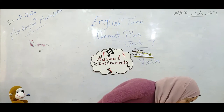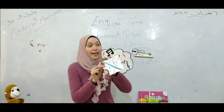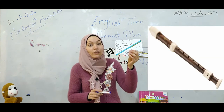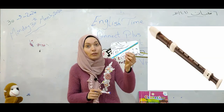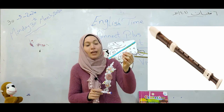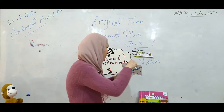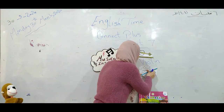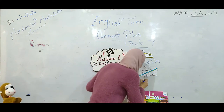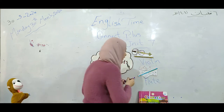The next instrument — guess what? It's a flute. It's a flute. I like playing the flute very very much. I can play it very well. Flute. Repeat after me, monkey: I can play the flute. I can play the flute. Very clever!